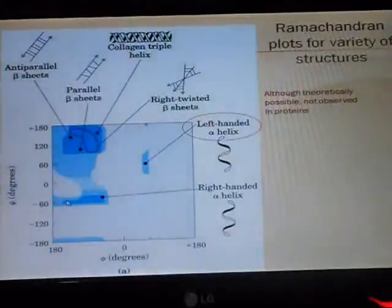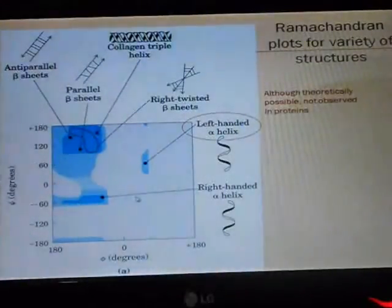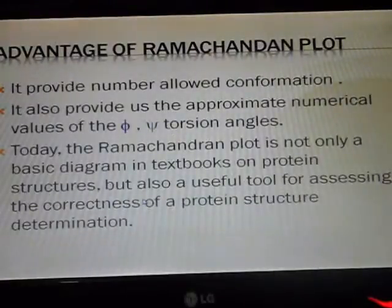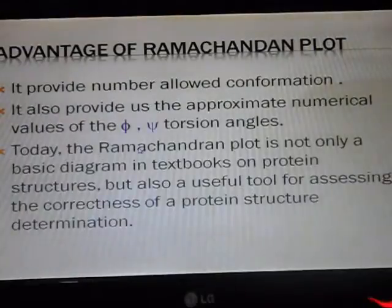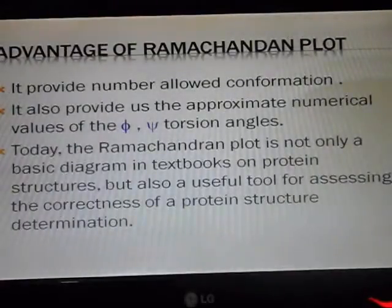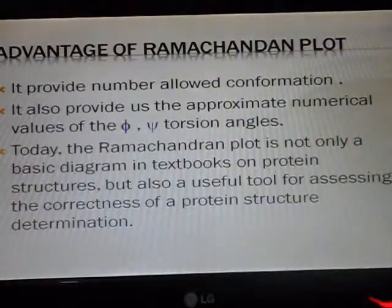We can take this advantage of Ramachandran plot to provide the number of allowed conformations and it also provides us the approximate numerical values for phi and psi torsion angles. Today the Ramachandran plot is not only a basic diagram in textbooks on protein structure, but also a useful tool for assessing the correctness of protein structure determination. Thank you.